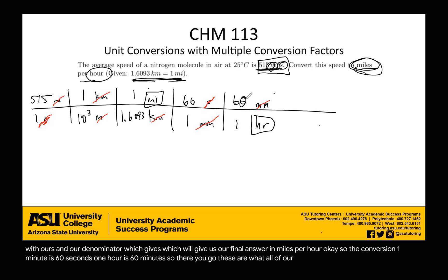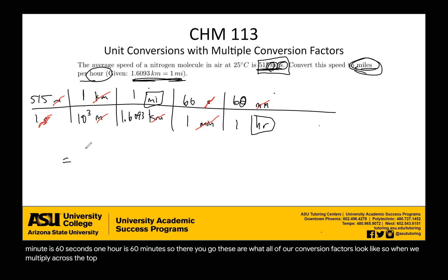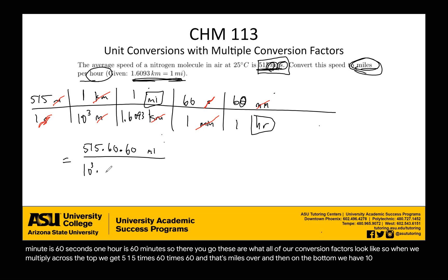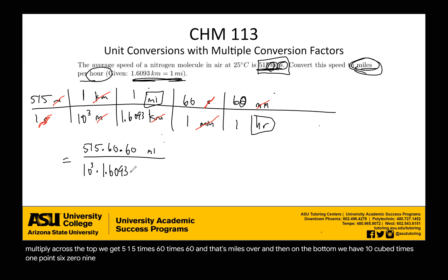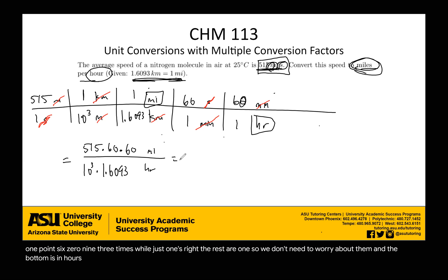So these are what all of our conversion factors look like. When we multiply across the top, we get 515 times 60 times 60 — that's miles. On the bottom we have 10³ times 1.6093, and the rest are ones so we don't need to worry about them. The bottom is in hours. Then we just multiply across the top and divide those out — we can use a calculator for that.